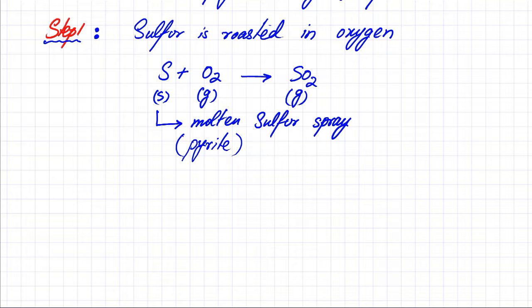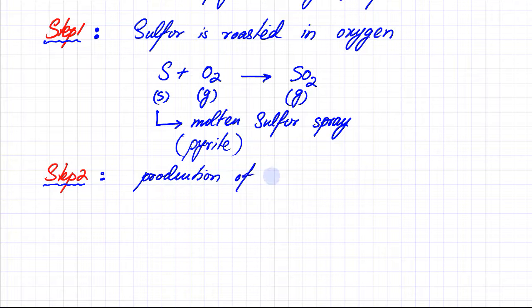Step two is the production of sulfur trioxide (SO3).